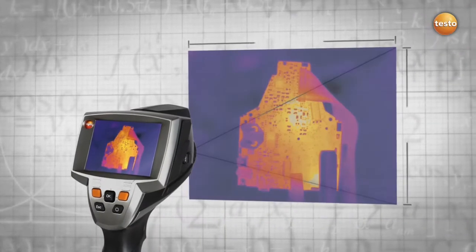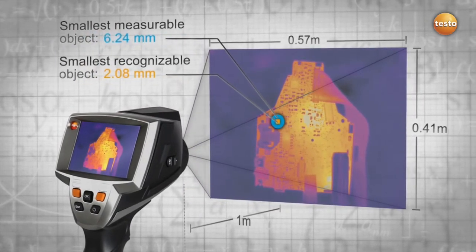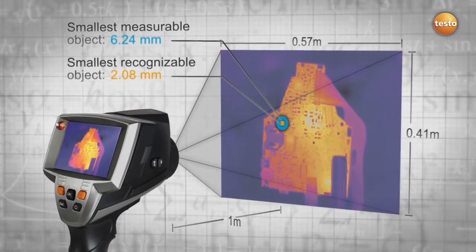The Super Resolution technology leads to more meaningful thermal images. But that's not all: as your smallest measurable object decreases in size, you are still able to detect more details while maintaining the same distance to your measured object.